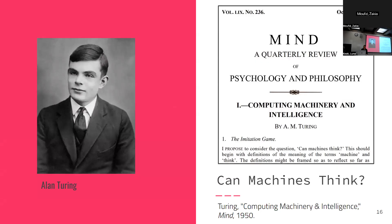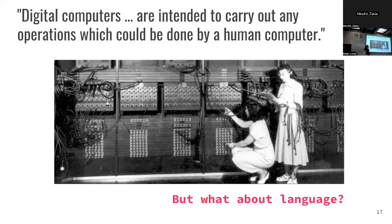I always like to begin with Alan Turing, specifically his article 'Computing Machinery and Intelligence,' published in the philosophy journal Mind in 1950. He begins with the imitation game — which people may recognize as the movie loosely based on his life — and proposes to consider the question: can machines think? In 1950 he's thinking about digital computers in a very particular way.